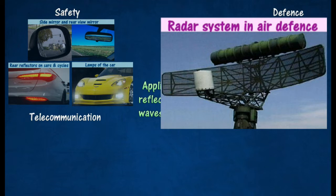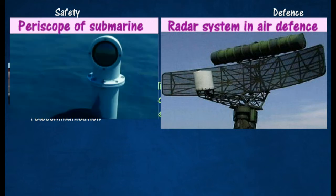they are reflected back to the receiver at the aerial. Periscope: light rays from an object enter the first plane mirror at the top of the periscope, and are then reflected onto the second plane mirror at the bottom.